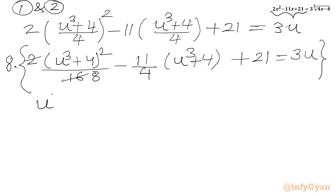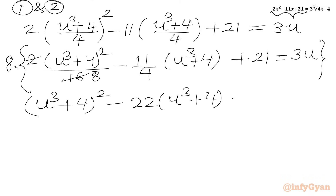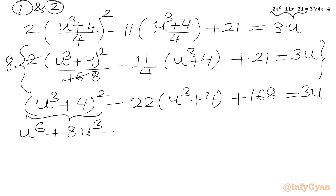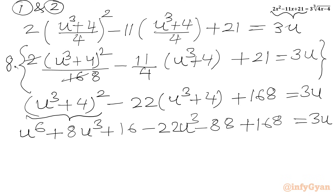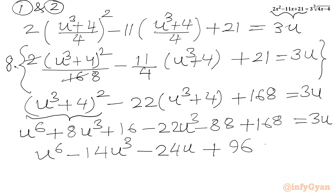Multiplying the entire equation by 8 on both sides, we get (u cubed plus 4) squared minus 22(u cubed plus 4) plus 168 equal to 24u. Expanding using the identity (a+b)² gives u to the power 6 plus 8u cubed plus 16 minus 22u cubed minus 88 plus 168 equal to 24u. Bringing all terms to the LHS, we get u⁶ minus 14u³ minus 24u plus 96 equal to 0.